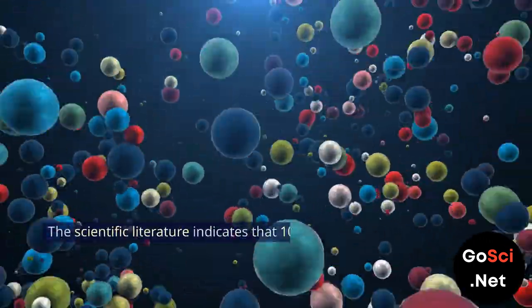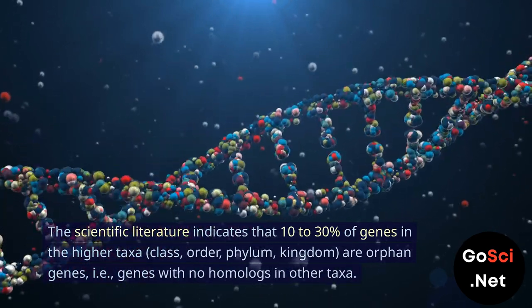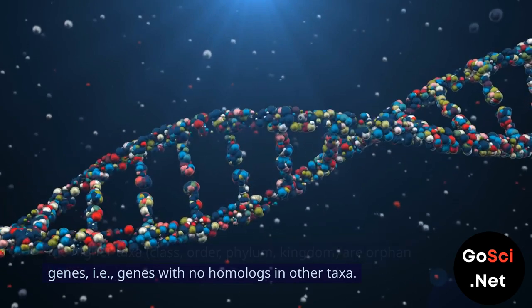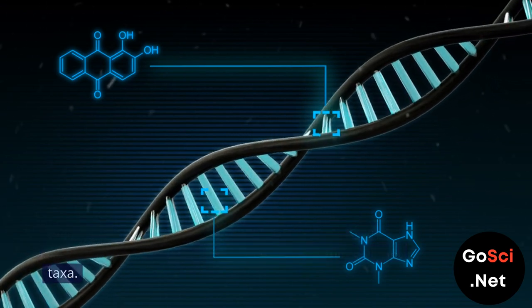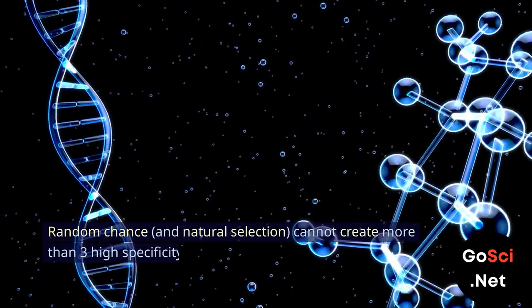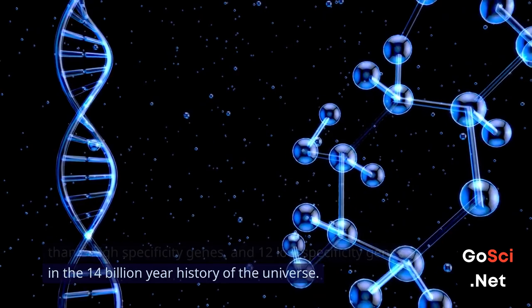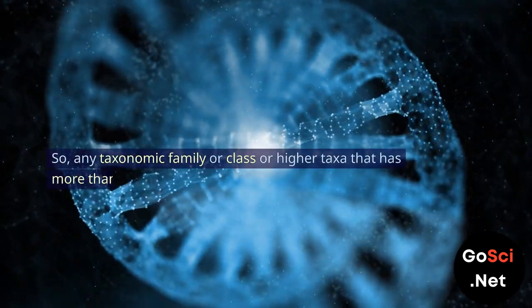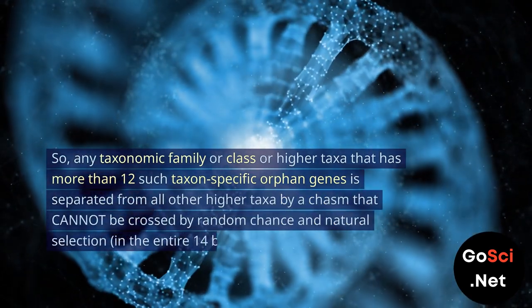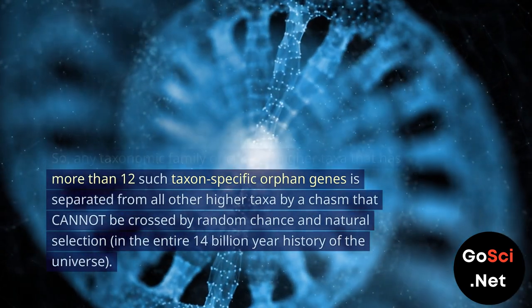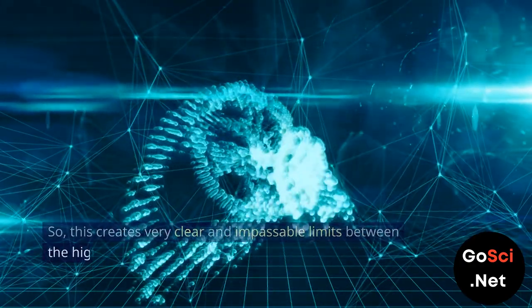Orphan gene limits: The scientific literature indicates that 10 to 30% of genes in the higher taxa — class, order, phylum, kingdom — are orphan genes, i.e., genes with no homologues in other taxa. These taxa-specific orphan genes are needed to create the distinguishing features of each higher taxon. Random chance and natural selection cannot create more than 3 high-specificity genes and 12 low-specificity genes in the 14 billion-year history of the universe. So any taxonomic family, class, or higher taxon with more than 12 taxon-specific orphan genes is separated from all other taxa by a chasm that cannot be crossed by random chance and natural selection in the entire 14 billion-year history of the universe, creating very clear and impassable limits between the higher taxa.